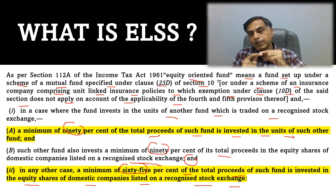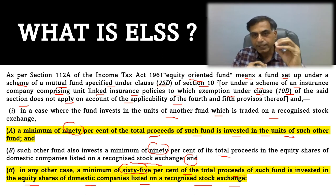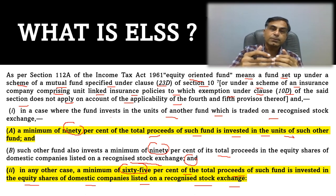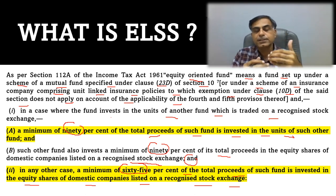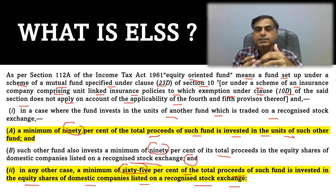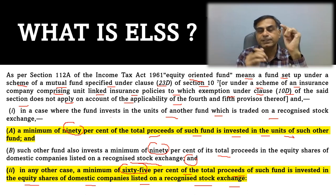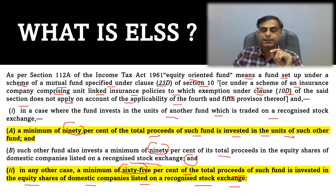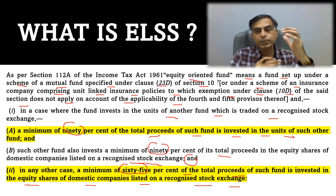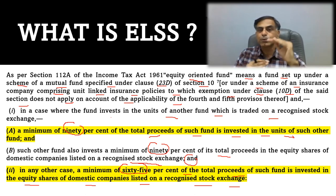An equity oriented fund means a fund which is investing 65% of its investment into listed equity shares. You can ask what will happen with the remaining 35%. The remaining 35% — which is the maximum — could be into debt, debentures, bonds, treasury papers, etc. So there is a cap: 65% minimum into equity, 35% maximum into debt. It can be 75% equity and 25% debt — the proportion can be higher for equity and lower for debt.